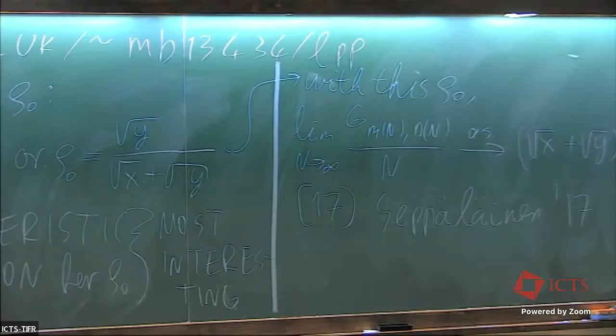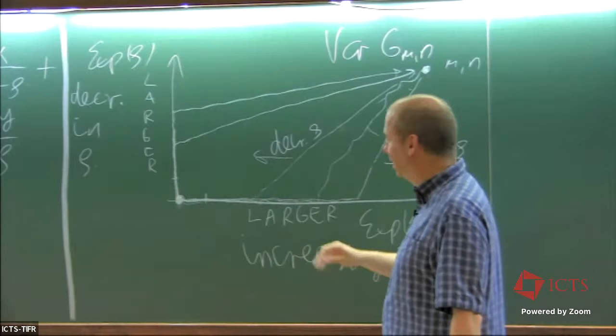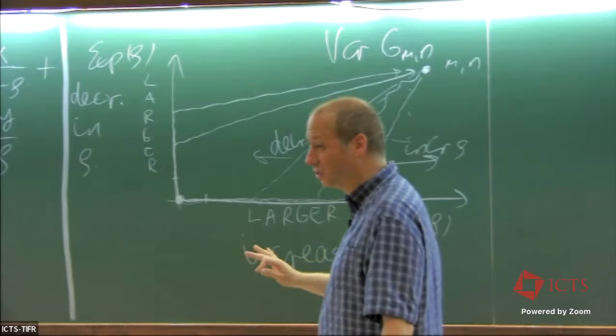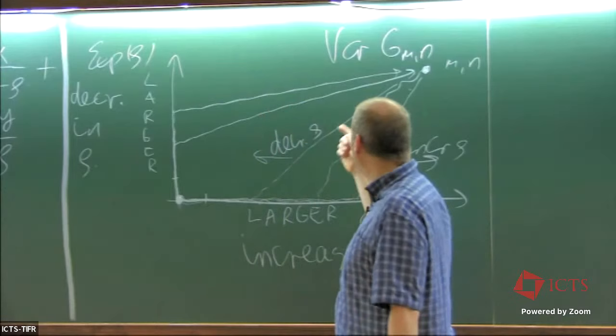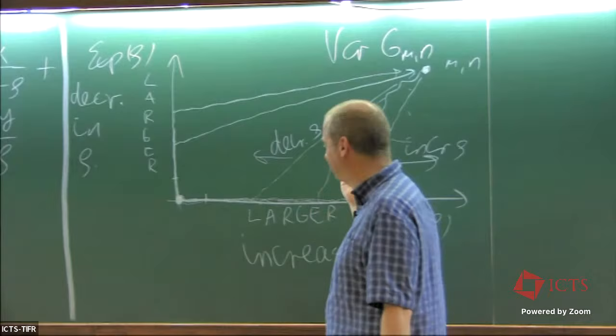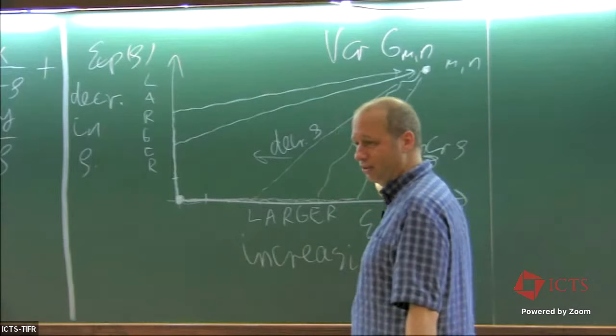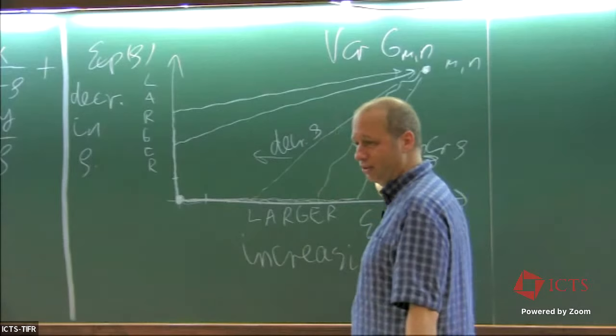What is going to happen is that by optimizing among all upright paths, you can make the fluctuations smaller than normal central limit fluctuations. As soon as you exit the boundary, you see smaller fluctuations and a different scaling limit of fluctuations, and you don't want to suppress that with boundary strawberries.